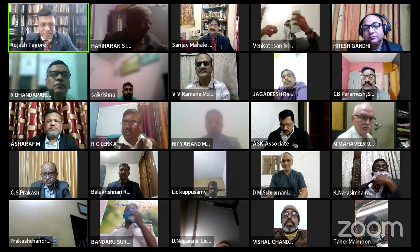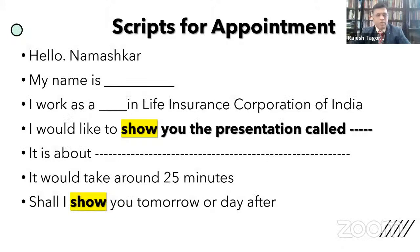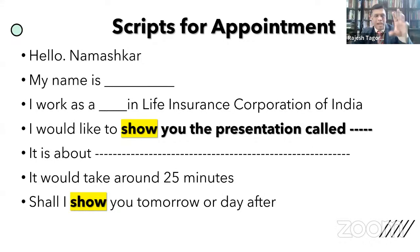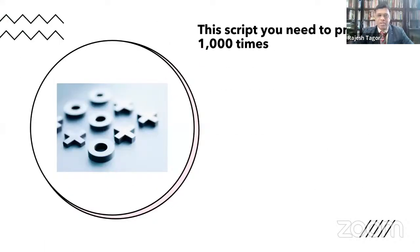Resuming the screen share: either you can do cold calling or appointments over the phone. Either way, you have to have a script. This is the script for fixing up an appointment. Once you have the script, you can meet anybody very easily. The script has to be practiced a thousand times.